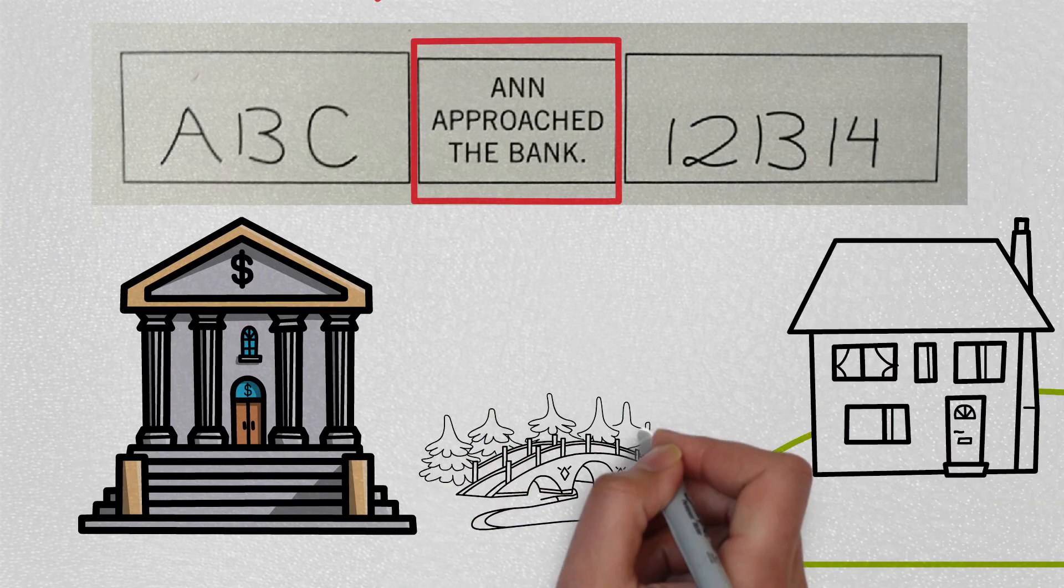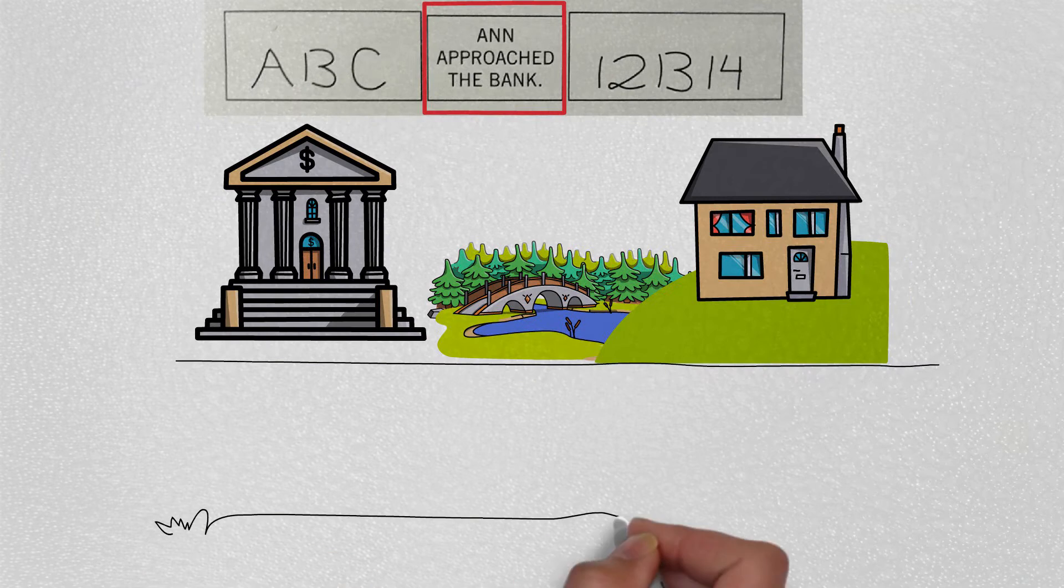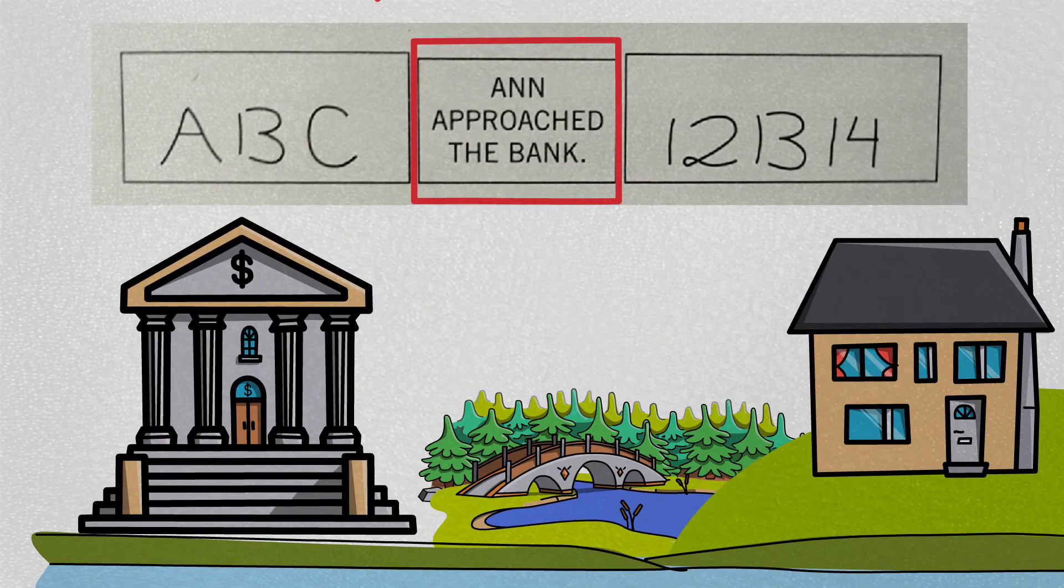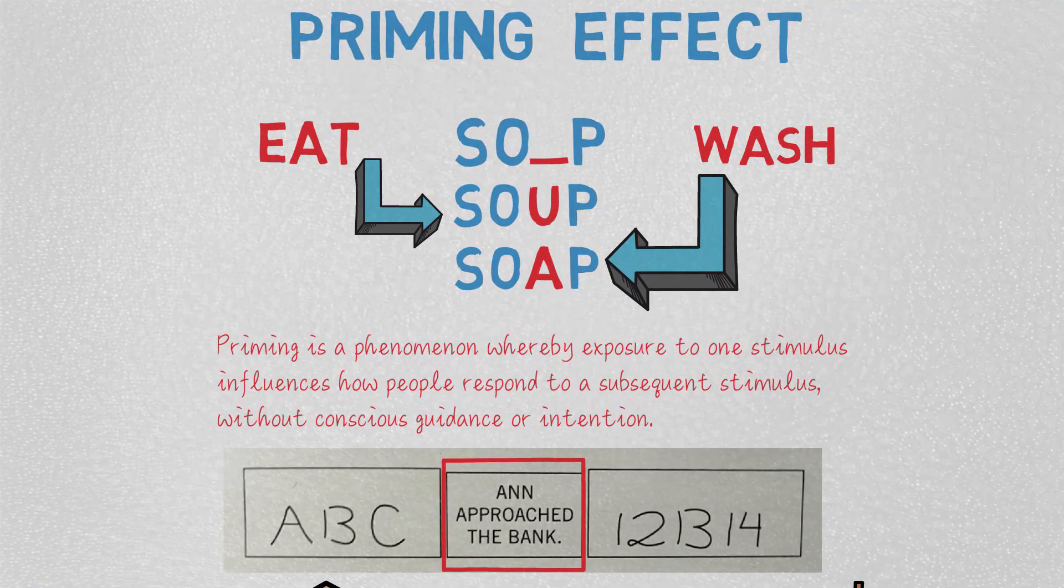But for some of you, if you live nearby a river or if you have been to a river recently, you might have imagined Ann approaching the river bank. But for most of us who have been to the bank, the financial institution, more often than a river bank, most of the time repetitive stuff or things we are more exposed to is on top of our mind.